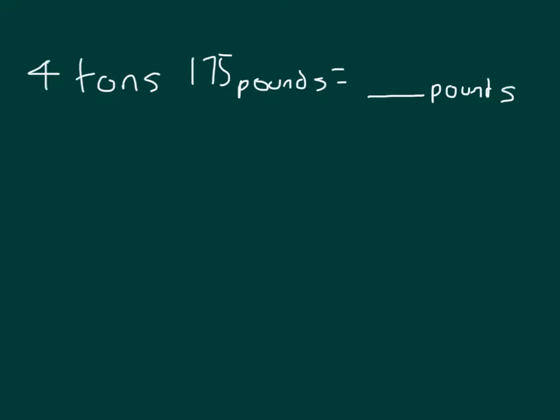Here we have 4 tons, 175 pounds, equaling how many pounds? We know that 1 ton is equal to 2,000 pounds. So that's our conversion factor. We'll look at the 4 tons to see how many pounds that it is worth. Draw a bar model. Thinking about those 4 tons.